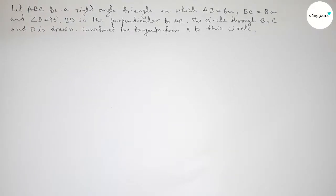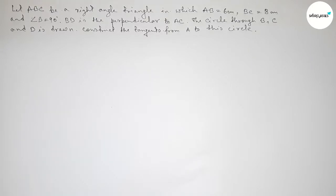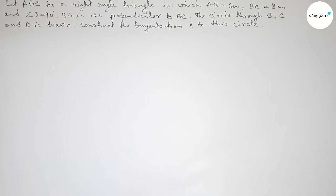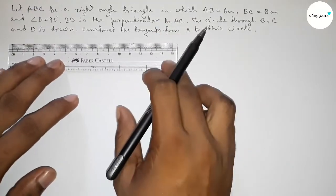Hi everyone, welcome to essay share classes. Today we are discussing an important geometrical construction. First, we have to construct a right angle triangle ABC with given two sides AB equal to 6 centimeter and BC equal to 8 centimeter, with angle B equal to 90 degrees. Then we have to draw a perpendicular line BD from point B to line AC, construct a circle through points B, D, C, and draw two tangents from point A to that circle.